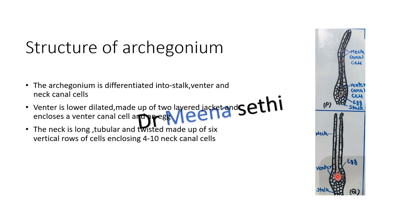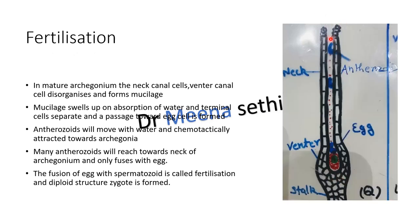Antheridia mature earlier than archegonia, so antherozoids are liberated outside and will move with the help of water current. The mucilage present at the tip of the archegonia contains a certain chemical like malic acid, which will attract the antherozoids toward itself. So antherozoids will move toward the archegonia, travel the canal of the archegonia, reach toward the egg cell, and their flagella will be resolved. Then the egg nucleus and antherozoid nucleus will fuse. This process of fusion of male gamete and female gamete — that is, egg and antherozoid nucleus — is called as fertilization or syngamy. After fertilization, a diploid structure called as zygote will be produced, and its genetic constitution will be diploid. This will undergo mitotic cell divisions to form the sporophyte.